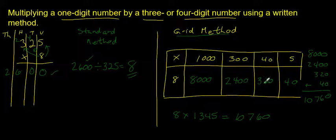The grid method is very easy to check because you can actually see each of the steps. 8 times 1,000 is 8,000, that's correct. 8 times 300 is 2,400, correct. 8 times 40 is 320, correct. 8 times 5 is 40, correct. I've written all the numbers correctly: 40 plus 20 is 60, 300 plus 400 is 700, and 2,000 plus 8,000 is 10,000.